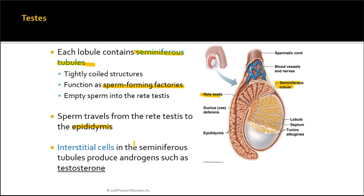The testes are not only responsible for producing sperm in the seminiferous tubules, but also for producing hormones — in particular testosterone. It is the interstitial cells found within the seminiferous tubules that produce hormones classified as androgens, in particular testosterone.